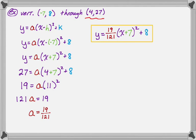So that's how we can work with a vertex and a point. You really just need to know that form that we're going to use. So y equals a, the quantity x minus h squared plus k. Make sure you have that memorized, and you should be fine. I hope you found this helpful, and good luck!